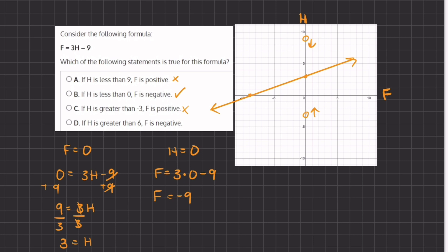Let's move on to D. If h is greater than six, so greater than six, then f is negative. Well this is incorrect because when all the h values become more positive than six, all of the f values also are in the positive realm. Therefore D is also incorrect and our final answer will be B.